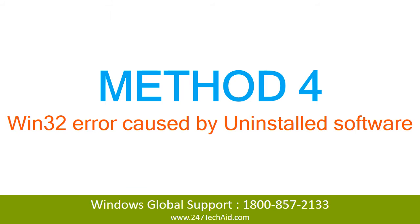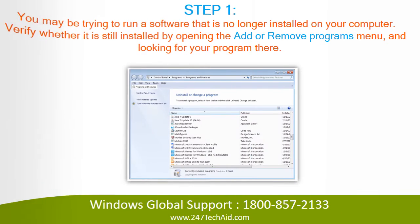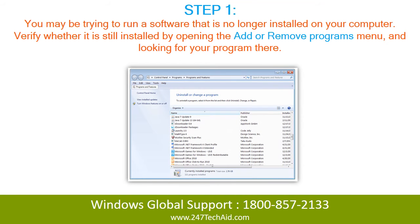Method 4: Win32 error caused by uninstalled software. Step 1: You may be trying to run software that is no longer installed on your computer. Verify whether it is still installed by opening the Add or Remove Programs menu and looking for your program there.